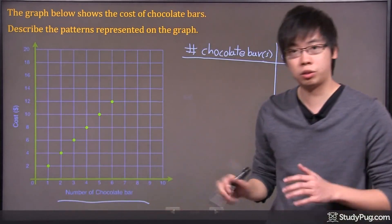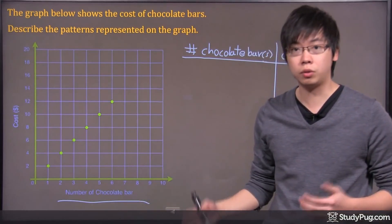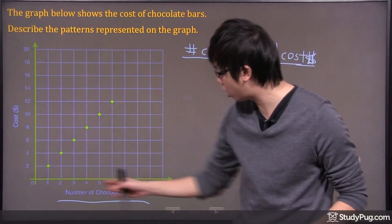Remember the x-axis is your independent variables. Here we have the number of the chocolate bars. We got 1 all the way up to 10.